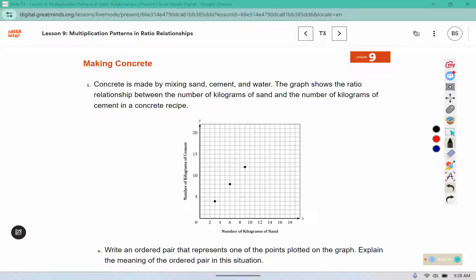So any of those three points you can write the ordered pair for. I'm going to select the first one, which has the coordinates 3 and 4. You can see it's 3 in the x direction and 4 in the y direction.